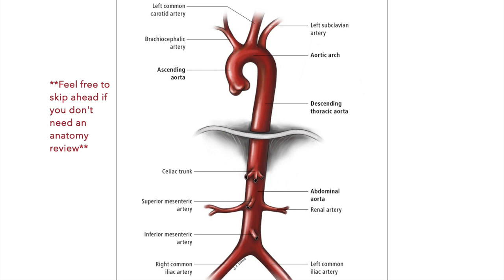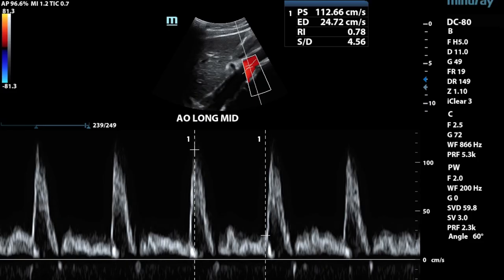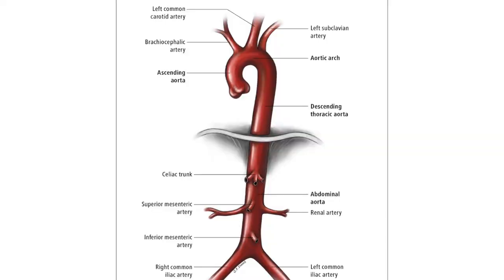The aorta is the first thing that I learned how to scan in ultrasound school. It has a fairly simple structure, and due to the nature of the aorta as an arterial vessel, it gives sonography students a chance to learn how to manipulate machine settings including color and Doppler. The aorta is thought of as two different continuous sections called thoracic and abdominal, and general sonography tends to examine the abdominal aorta.